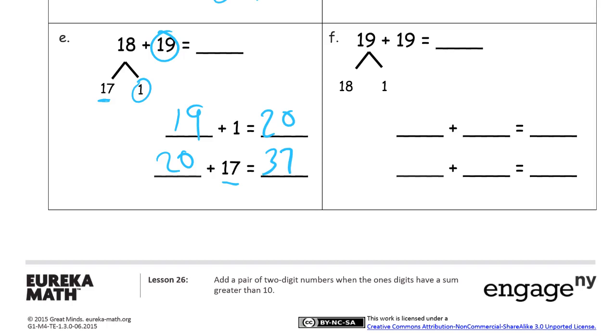And 19 plus 19, doesn't matter which one you split up, because they're both the same. There's the 1 we need to make it a 20. So, to make this 19 get it up to a 20, the next 10. So, it's going to be 19 plus 1 for 20. And then take that 20 and add the 18 to it. 20 plus 18 is 2 more 10s, 30, and we still have the 8 ones, 38.